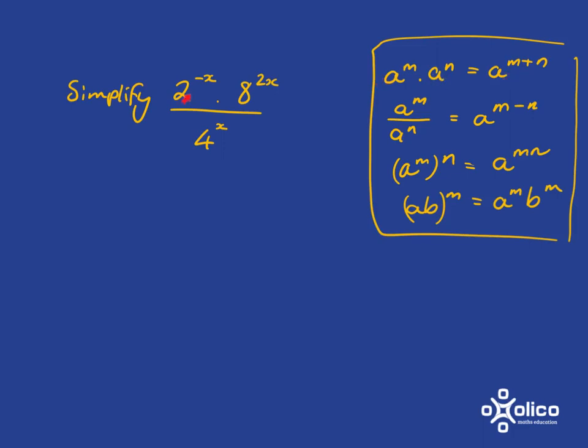And here you've got a 2, an 8, and a 4 as the base. So you actually aren't going to be able to apply these rules. So what we need to do is get the base the same. But obviously you know that 8 is 2 cubed, and you know that 4 is 2 squared. So we can actually get it in terms of the same base. Let's start by doing that.